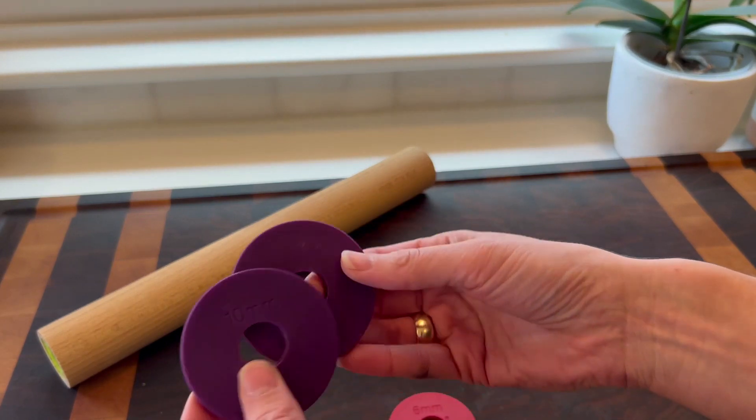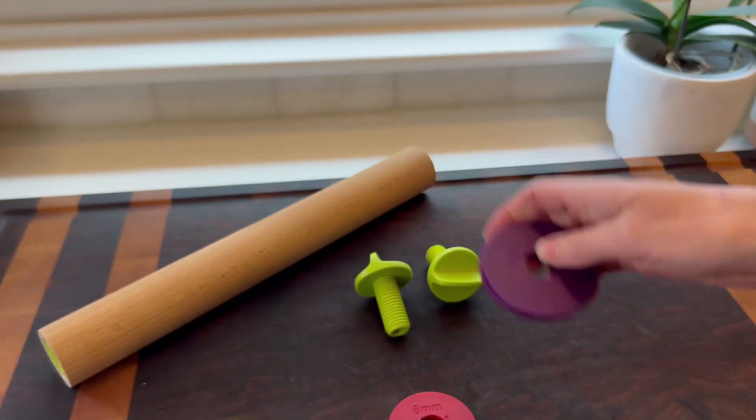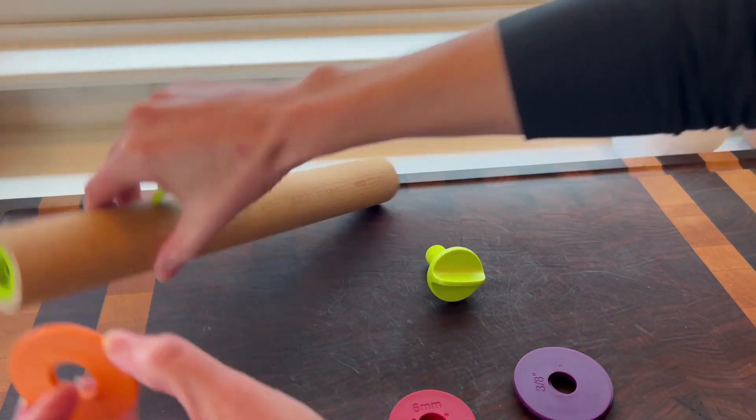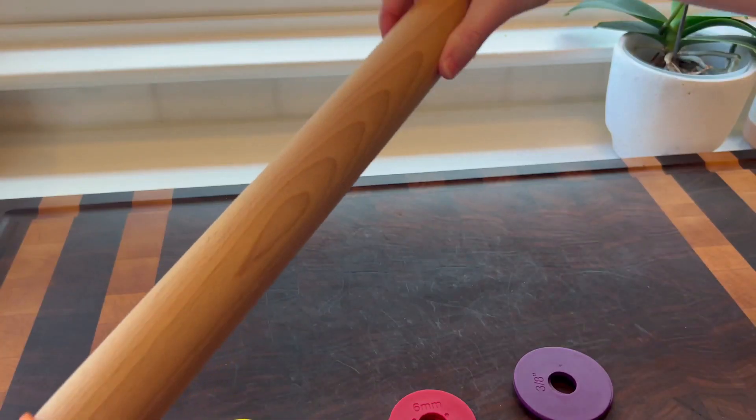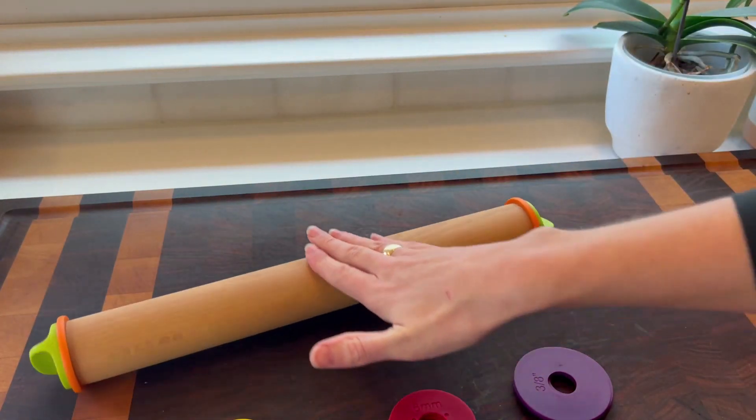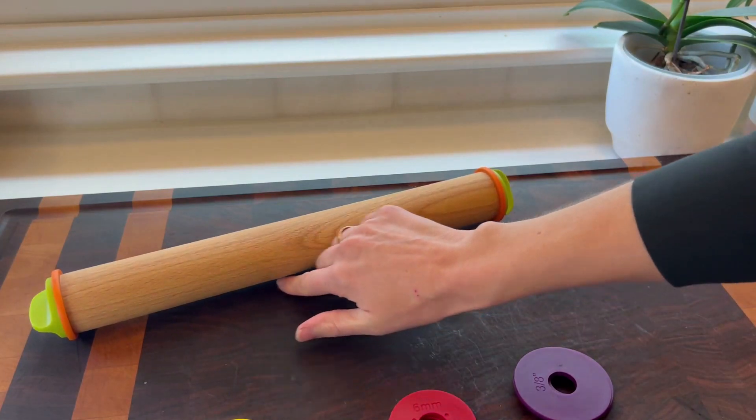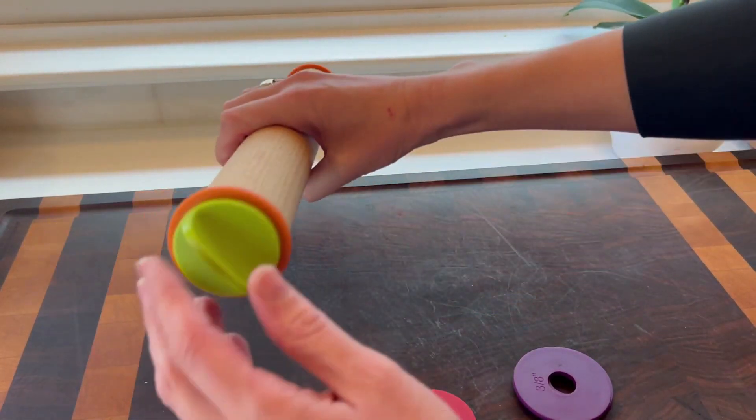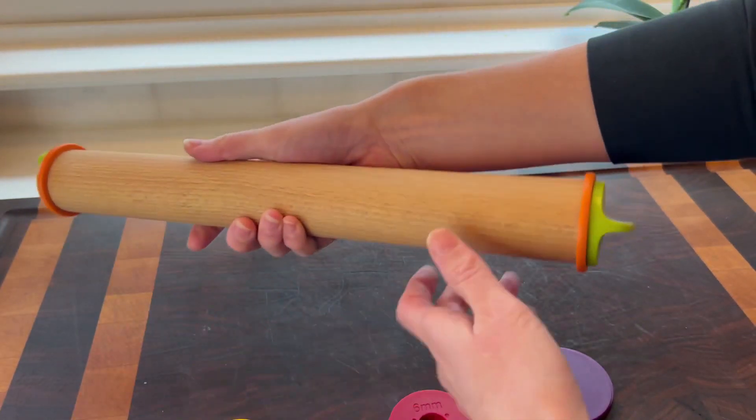Now how these work is you simply put it on the top and twist it in. And now if I roll, it will only roll to that specific thickness. My dough will not get any thinner than the width of this circle right here, and that gives me a lot of control over what I'm rolling and my dough.